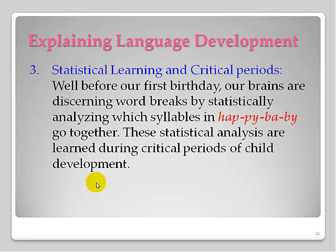Research shows that well before our first birthday, at about the one-word stage, our brains are able to discern word breaks in our native language, statistically analyzing which syllables — like in 'happy baby' — go together. If people say 'happy baby' and replace the 'B-Y' in baby with 'M-A,' the brains of those children find it very distressing. So it seems our brain is statistically analyzing language very early in our critical periods of development.